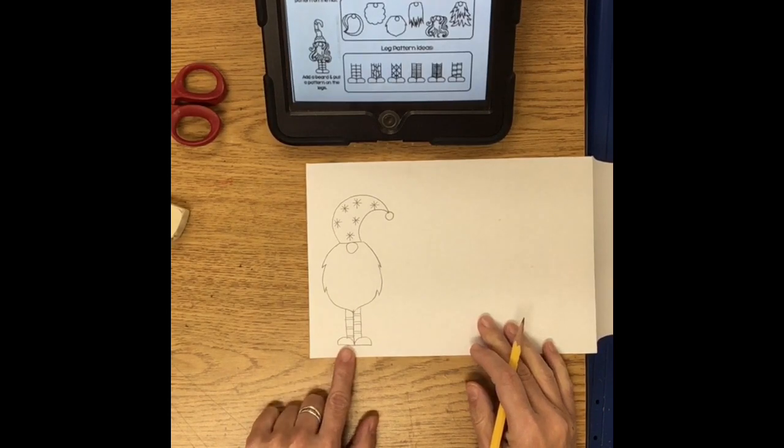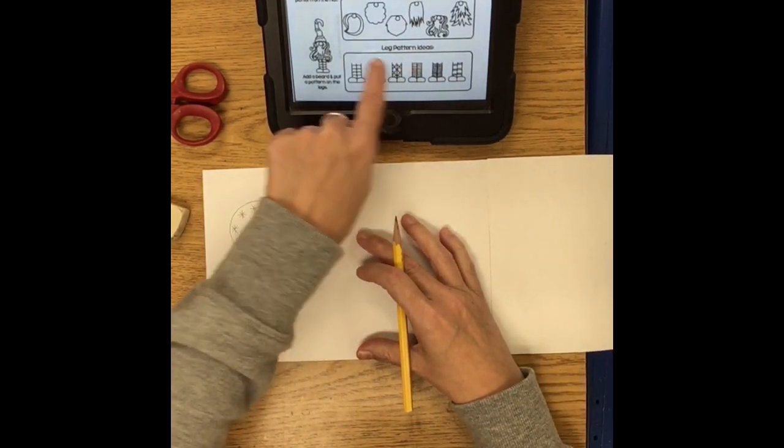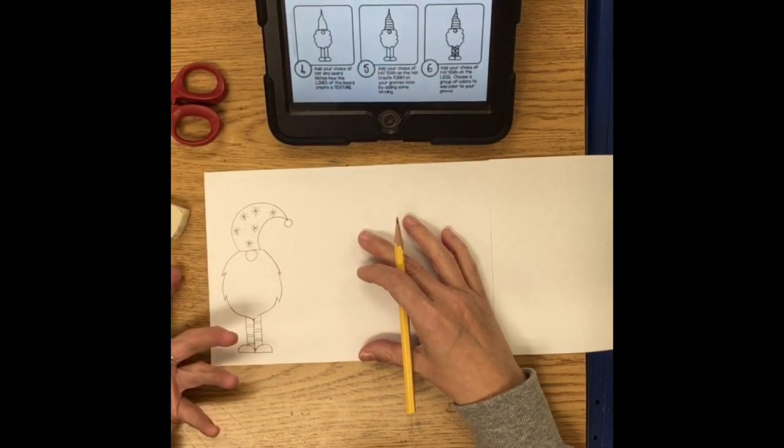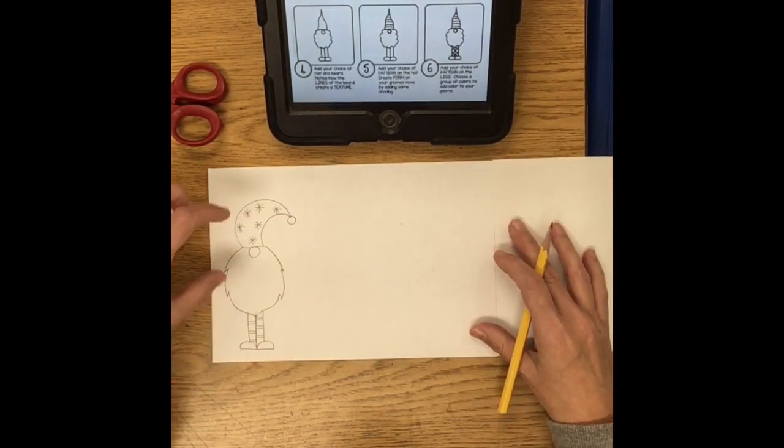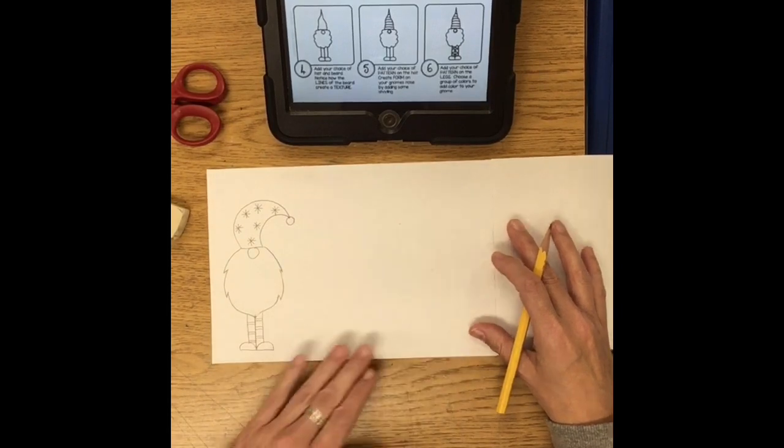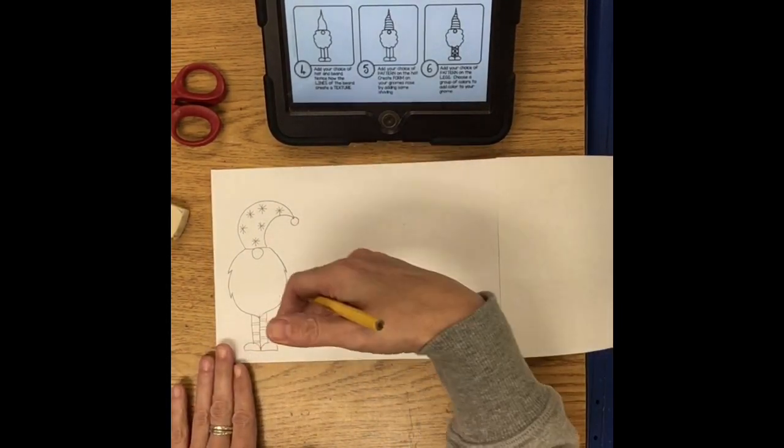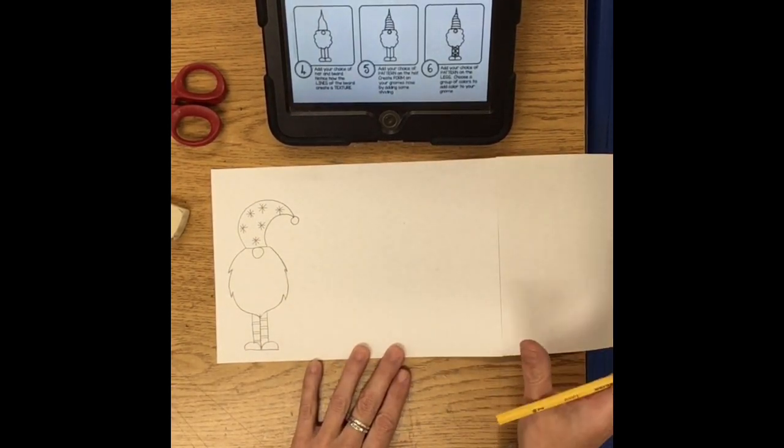All right so there's my first gnome and then I'm just going to repeat that process going back to the how-to steps and then once I get to the hat and the beard that's where things will be different. Do not draw the same gnome over and over. I want each hat, each beard to be different. You can mix and match on different ones if you have a favorite style hat or you want to have it lean to the other way. That's okay but each gnome should have differences to them.